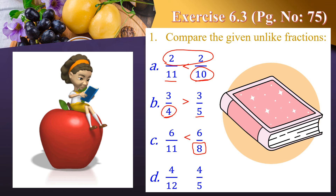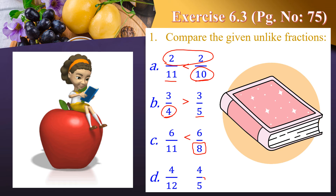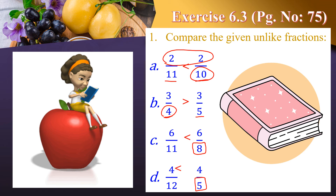(d) 4/12 and 4/5 — we compare the denominators; the smaller denominator gives the bigger fraction. Therefore, 4/12 is less than 4/5.